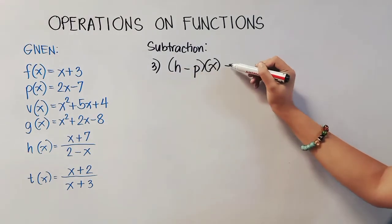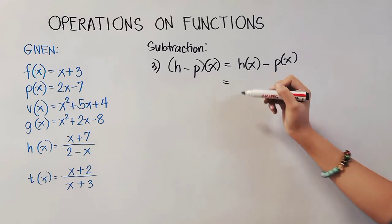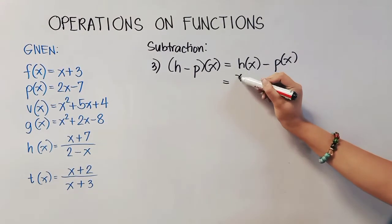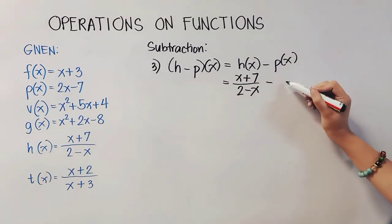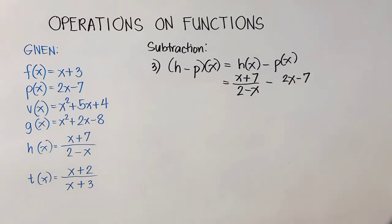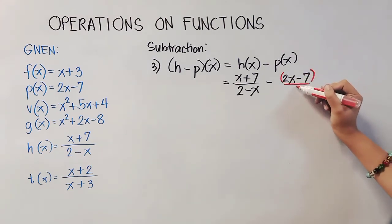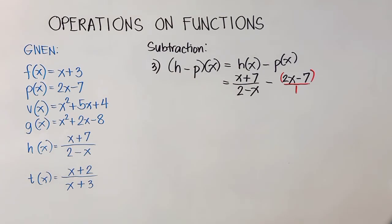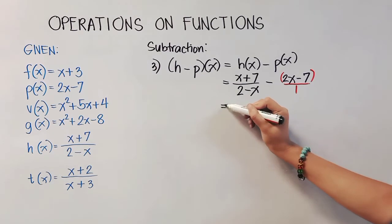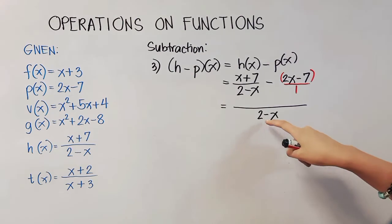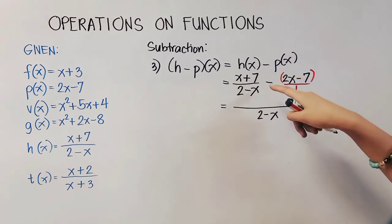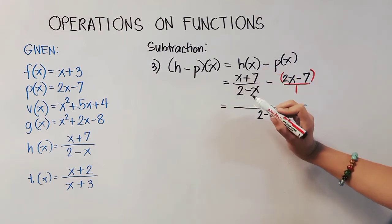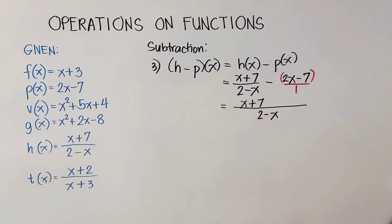Number 3 is written as H(x) − P(x). H(x) = (x + 7) / (2 − x), minus — enclose in parentheses — P(x) = (2x − 7), placed over 1 as a fraction since the first function is a fraction. Our LCD is (2 − x). We divide: (2 − x) ÷ (2 − x) = 1, and 1 × (x + 7) = x + 7. Then copy minus.